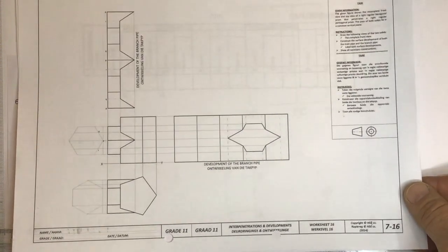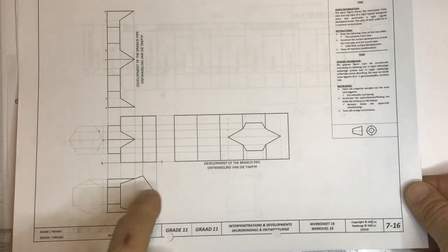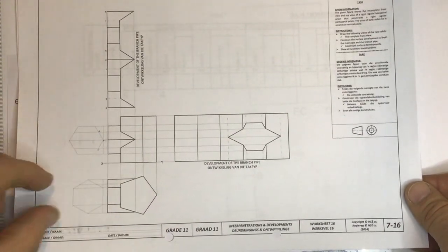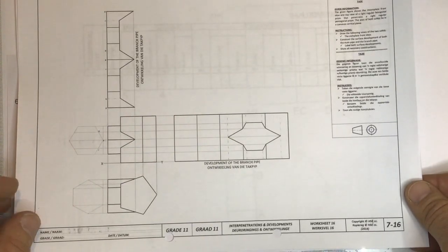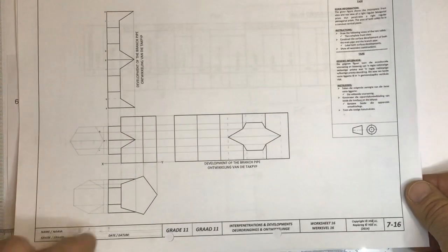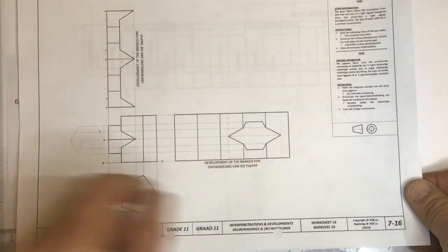What we're looking at today is the development drawing of these two pipes - a pentagonal pipe and a hexagonal pipe interpenetrating. The idea is that we need to figure out the curve of interpenetration first, and then we can do the developments of the branch pipe and then the main pipe.